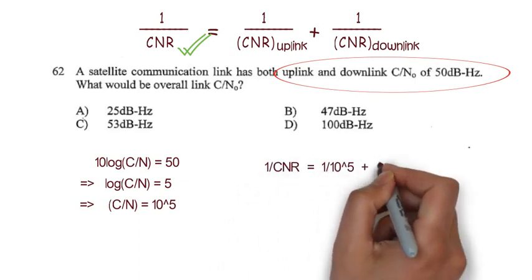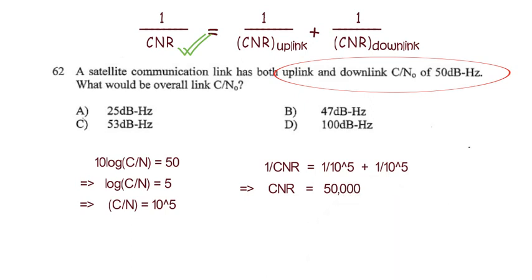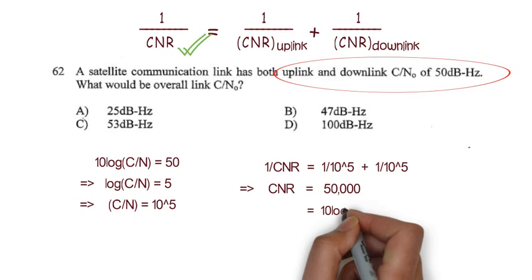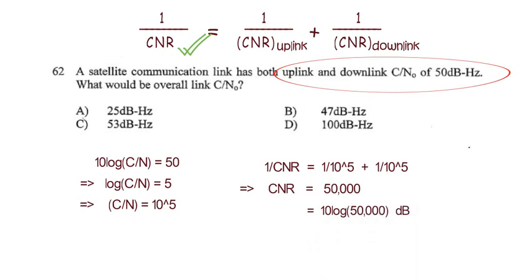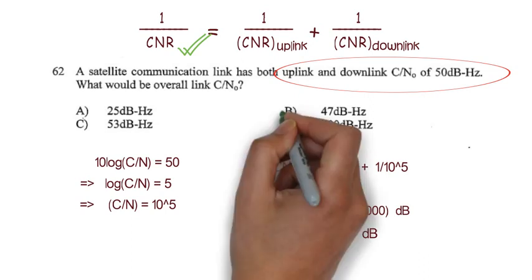Here we will get carrier to noise ratio will be 5 into 10 to the power 4. Now convert this again to decibel to check the answers available. So it will become 10 log 50,000 decibel, that will be equal to 46.98 dB. So here option B is the right answer.